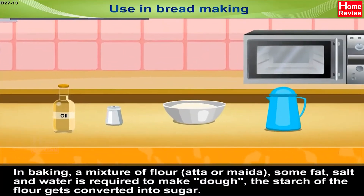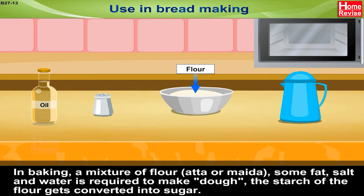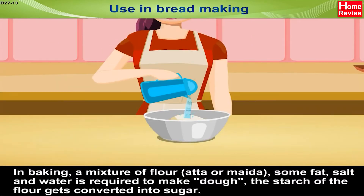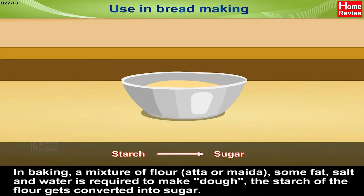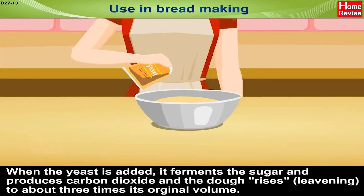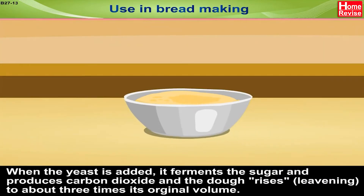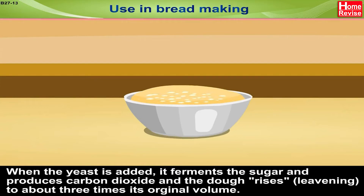Use in bread making: in baking, a mixture of flour (aata or maida), some fat, salt, and water is required to make dough. The starch of the flour gets converted into sugar. When yeast is added, it ferments the sugar and produces carbon dioxide.